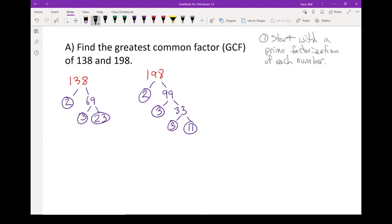Next, I'm going to write each of these numbers out as a product of its prime factors. 138 equals 2 times 3 times 23. 198 equals 2 times 3 times 3 times 11.